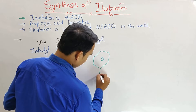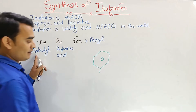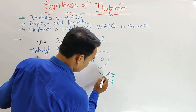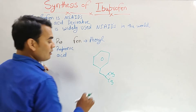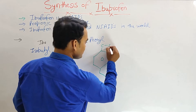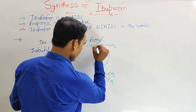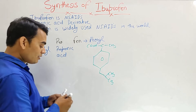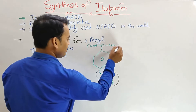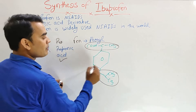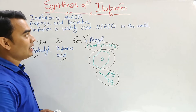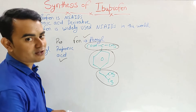Let's draw the structure of ibuprofen. At the para position there is an isobutyl group with CH3 and CH3. There is also the propionic acid chain with C=O, and the phenyl ring. So the structure has three major groups: the isobutyl group, the propionic acid chain, and the phenyl ring. This structure defines the name ibuprofen.